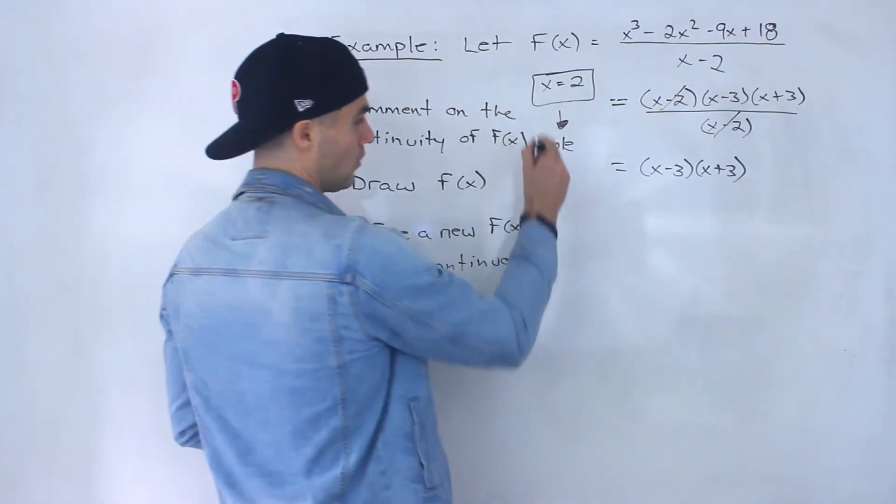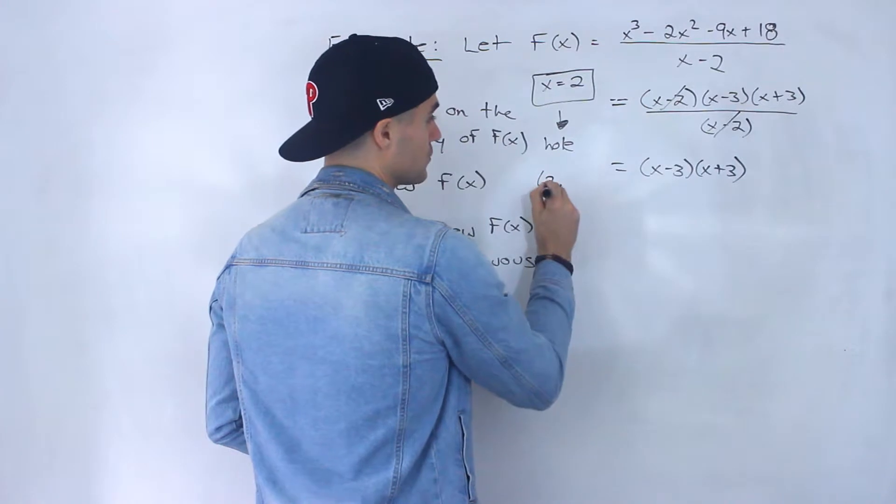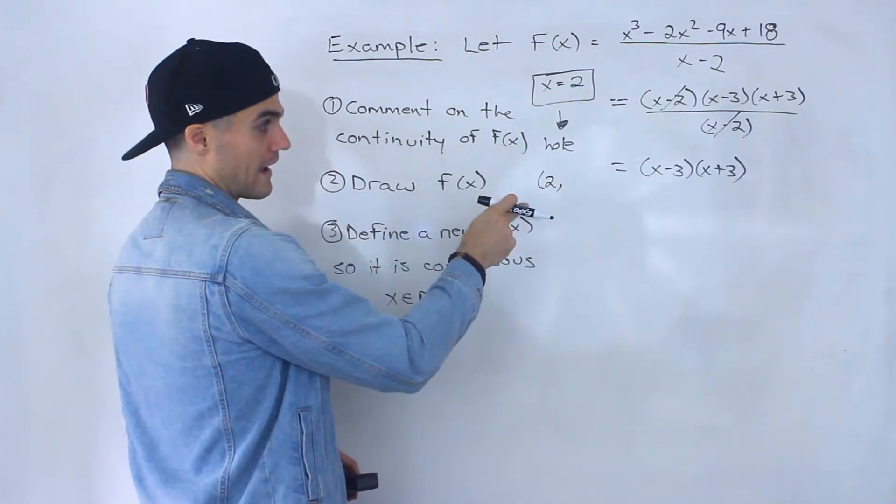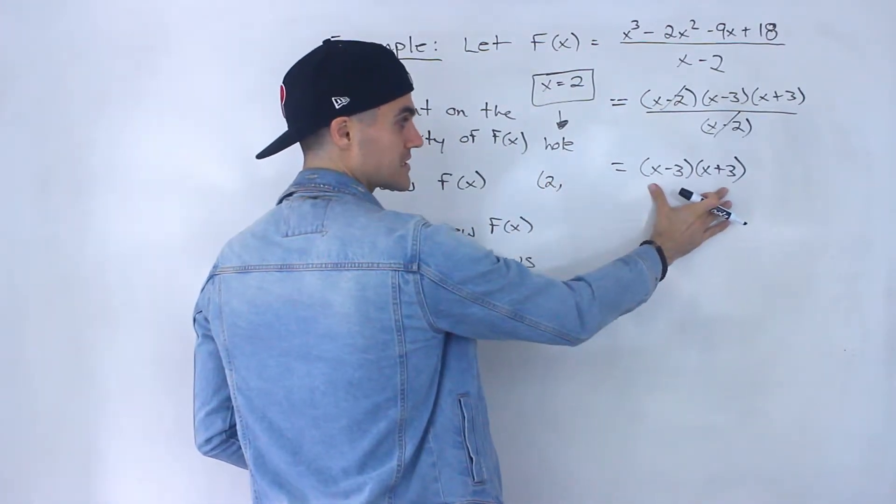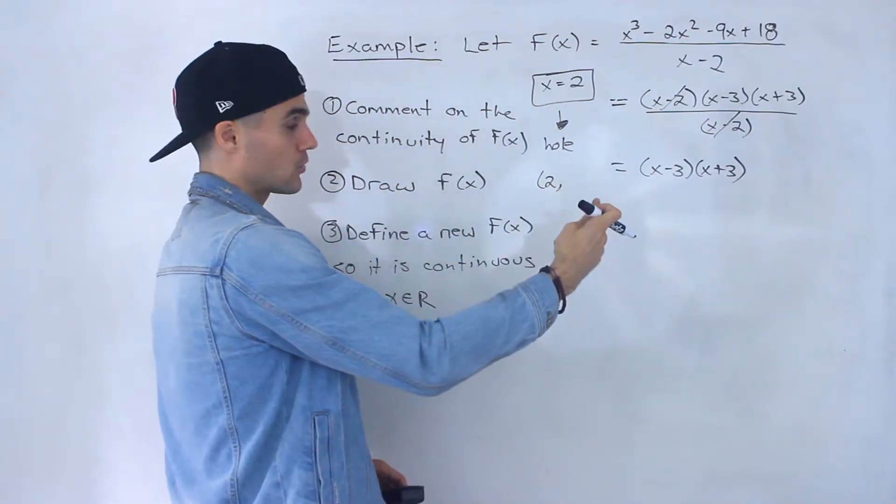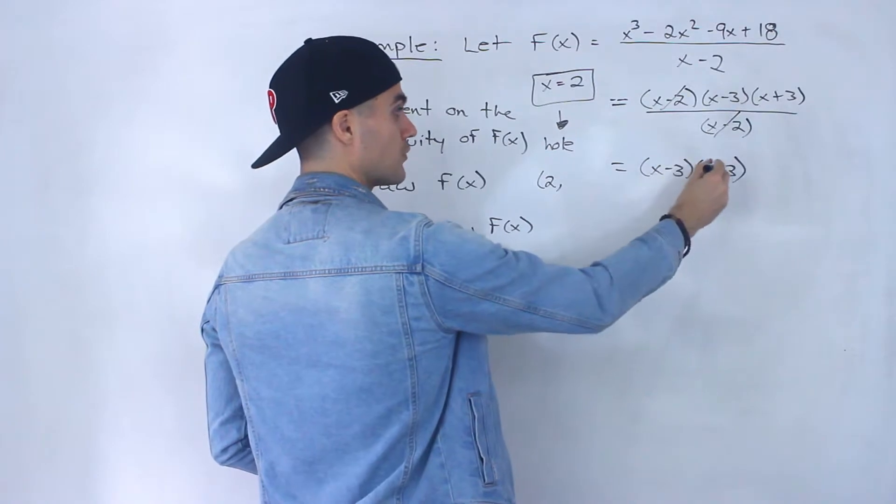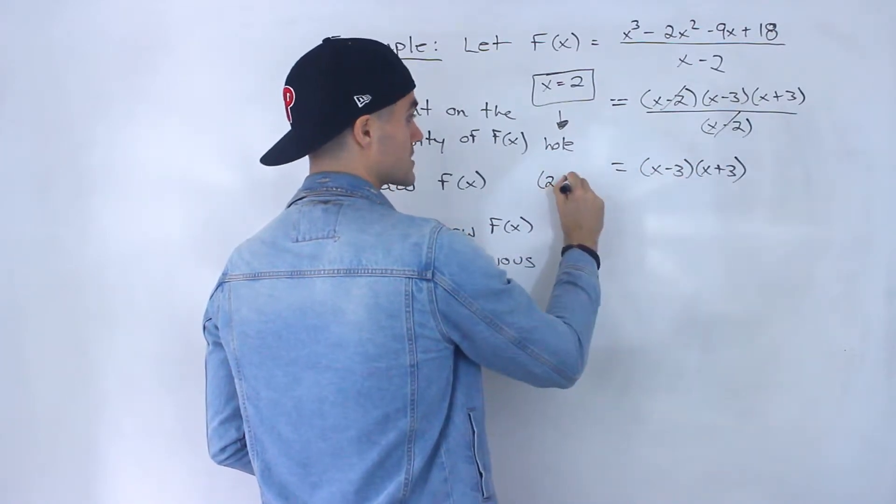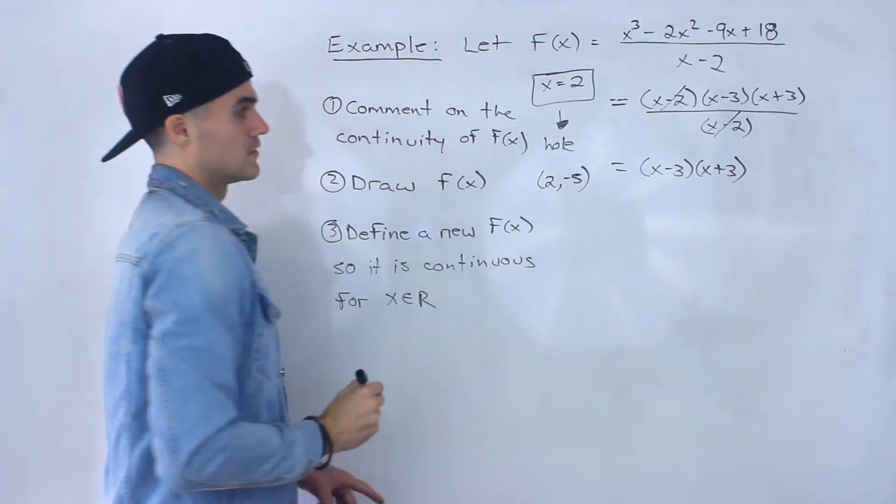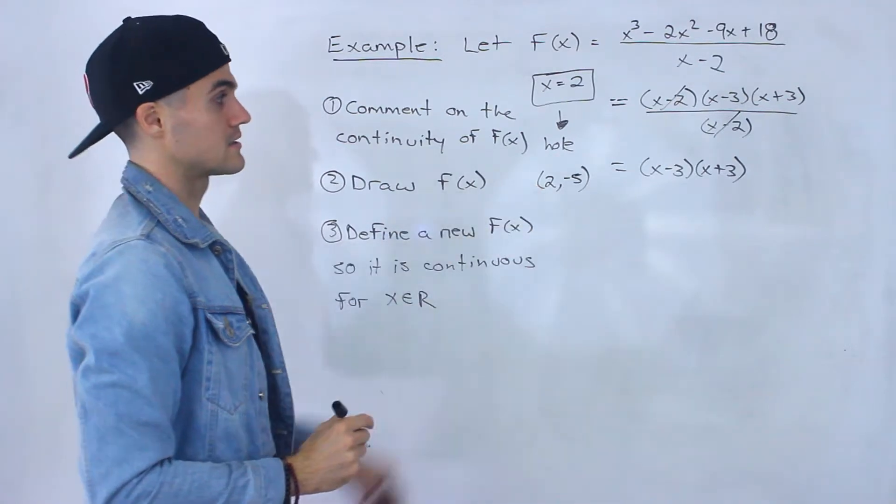And basically the hole is happening at an x value of 2, and it's happening at a y value. You can actually plug in 2 for that simplified expression to get the corresponding y value. And if you plug in 2, you'd end up with negative 1, you'd end up with 5, negative 1 times 5 gives us negative 5. So that's where the hole is happening.